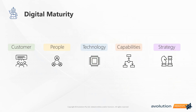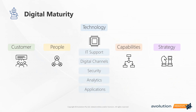The next step is understanding our digital maturity. It is important to understand that digital transformation is a journey involving a complex ecosystem of capabilities. The digital maturity model can be used in each phase of transformation to help identify where there are gaps, establish key areas to focus on, and just where to get started. Here we're going to focus on the maturity model for technology specifically, which falls out into IT support, digital channels, security, analytics, and applications.